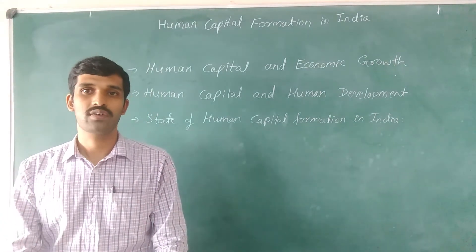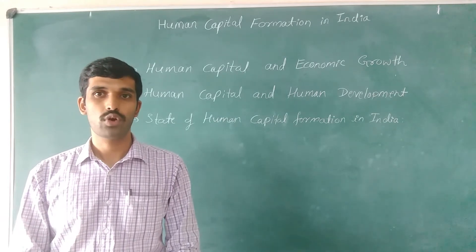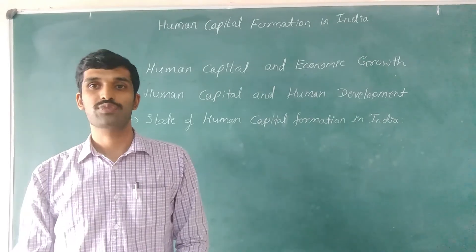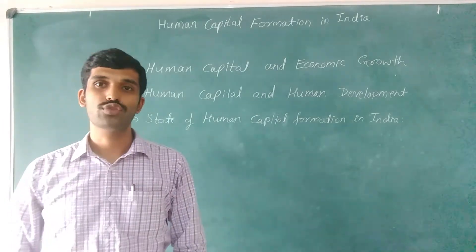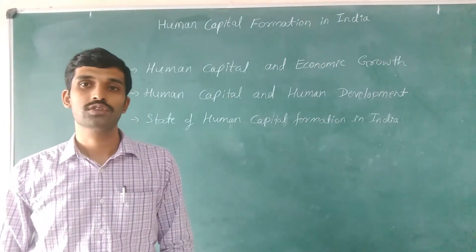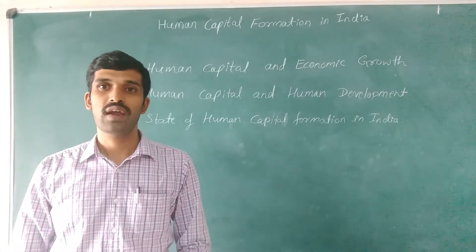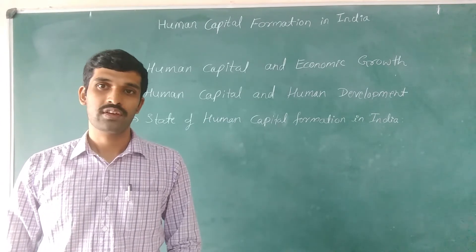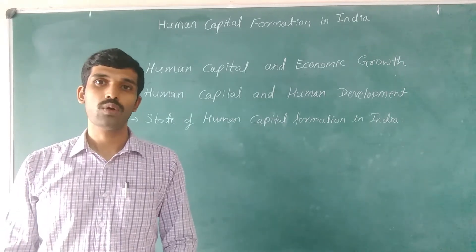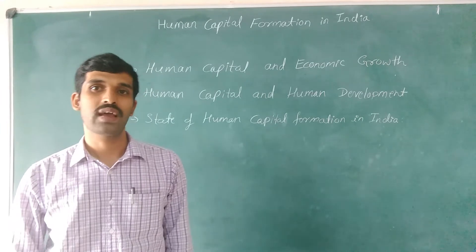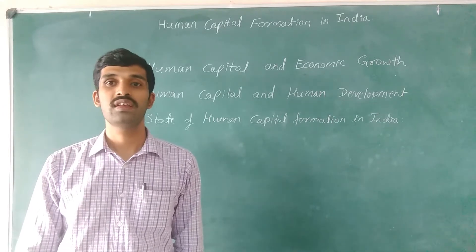In government, there are mainly three levels: local self-government, state government, and union government. Expenditures on health and education are carried by all three levels of government, and many private institutions run schools, colleges, and hospitals. Government also intervenes in private institutions to make health and education accessible to all people, because expenditures on health and education make a long-term impact and cannot be easily reversed.